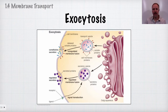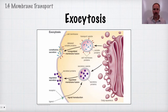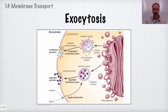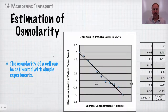Exocytosis is the opposite of endocytosis — it's the process of getting things out of the cell. Materials travel from the rough ER through the Golgi apparatus to form vesicles. These vesicles fuse with the cell membrane and release their contents into the surroundings, where they may be transported to other areas of the body or affect neighboring cells.